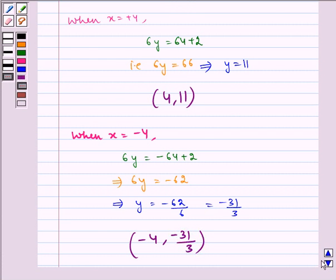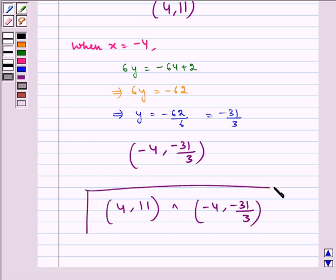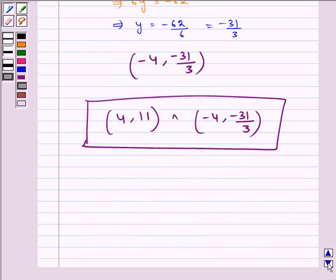Hence, the required points are 4, 11 and minus 4, minus 31 by 3. This is the required answer. I hope you understood this question. Bye and have a nice day.